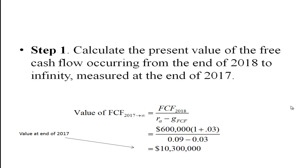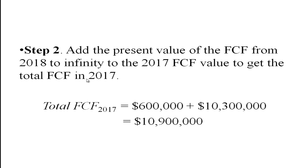Step one is to calculate the present value of the free cash flow occurring from the end of 2018 to infinity, measured at the end of 2017. We need to find the free cash flow in 2018, which is the free cash flow in 2017 times one plus the growth rate of free cash flow, divided by the weighted average cost of capital minus the growth rate of free cash flow. Working that out, we get $10,300,000. Adding that to the free cash flow in 2017 of $600,000, the total free cash flow in 2017 is $10,900,000.